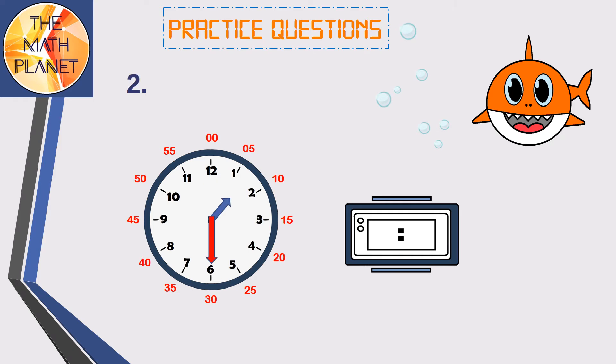Question 2. The analog clock is shown, and we need to find the digital clock. So, let's see. The hour's hand is between 1 and 2, so it is still 1 o'clock. The minute's hand is at 6, so it is 1 and a half, or 1:30.